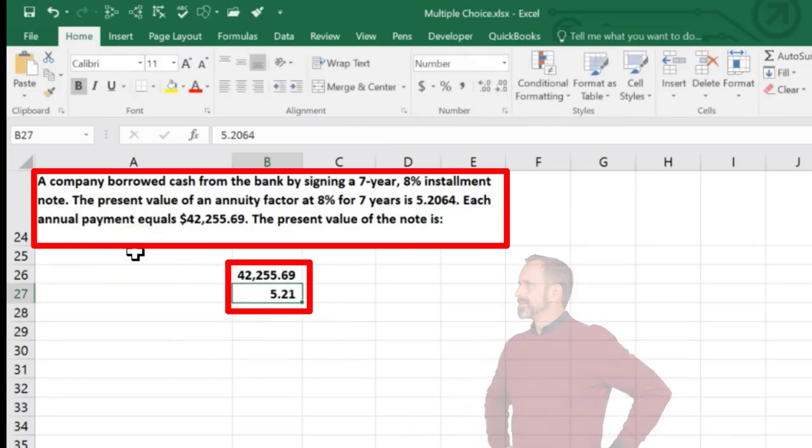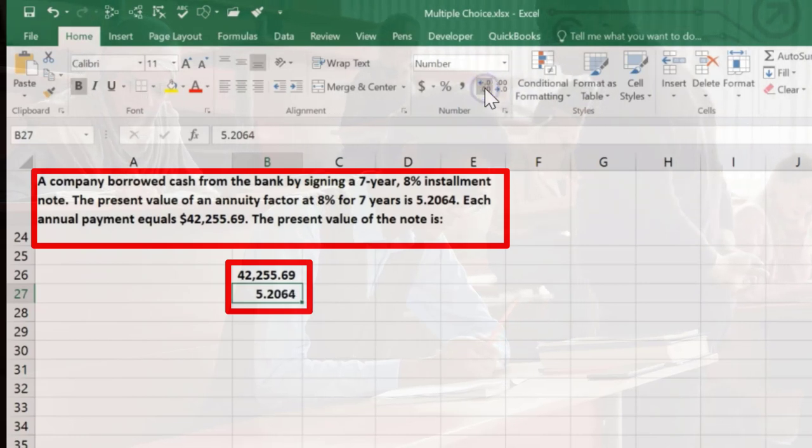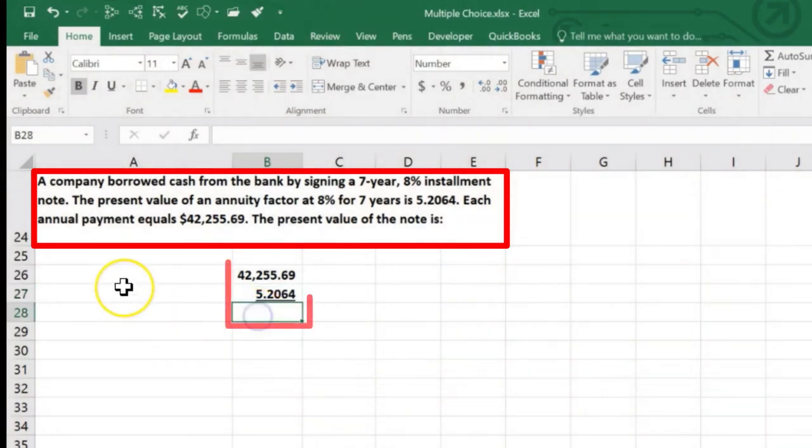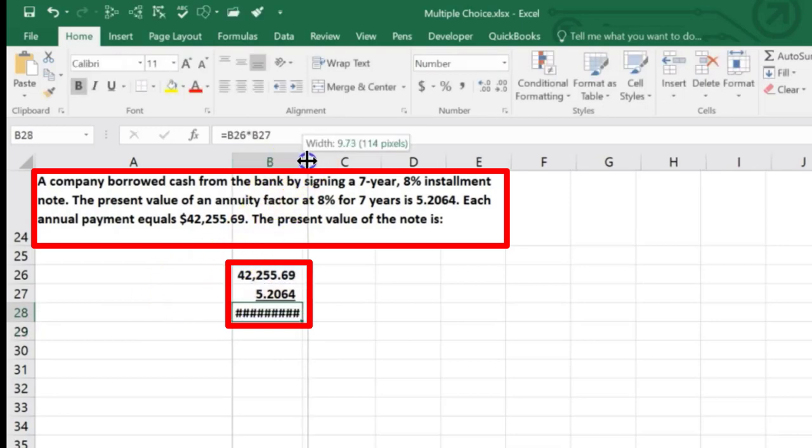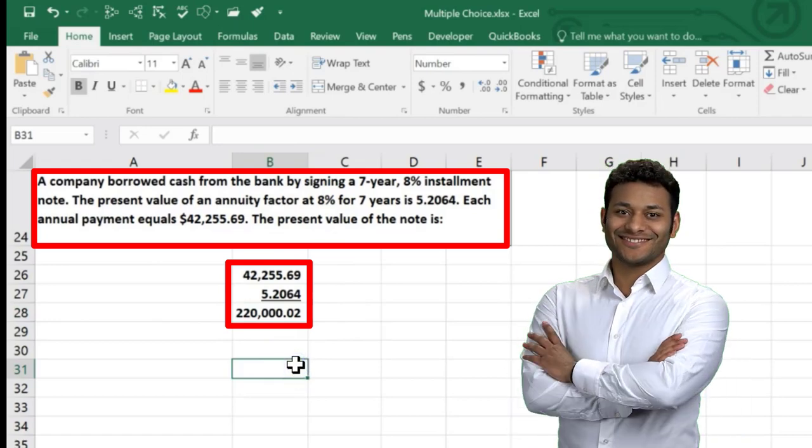Then we're just going to multiply that times the 5.2064. That's the amount we would find in an annuity table based on seven years at 8%. We're going to add decimals, go to Home tab, Font, Underline that, and then multiply that out. $42,255.69 times 5.2064, and we get a number too large for the cell which happens to be $220,000 and two cents.